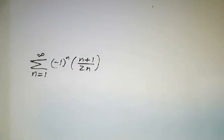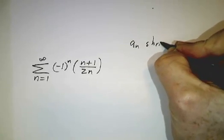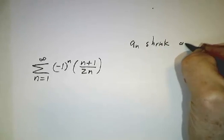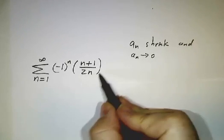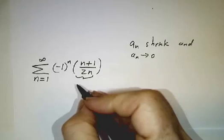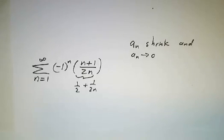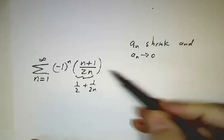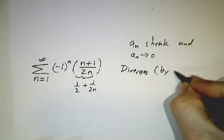However, be careful. When you have an alternating series, you need a_n to shrink and a_n has to approach zero. Does this example approach zero? No. This term here is 1/2 plus 1 over 2n. This gets smaller and smaller, but it doesn't approach zero — it approaches 1/2. So since the terms are not approaching zero, this series diverges, by the divergence test.